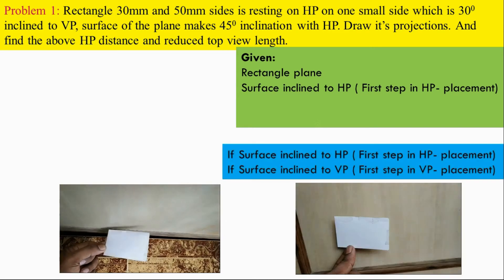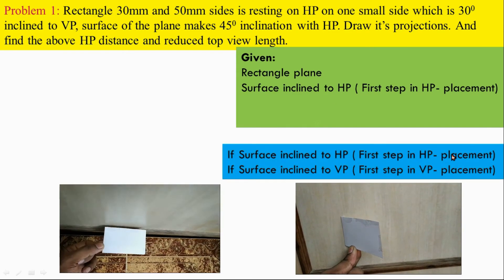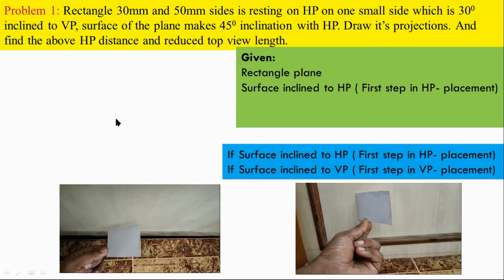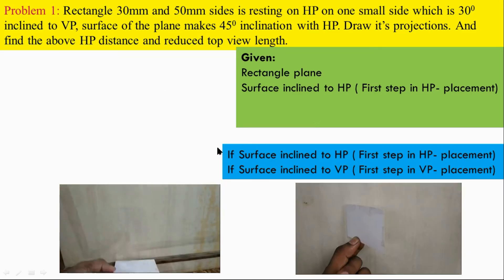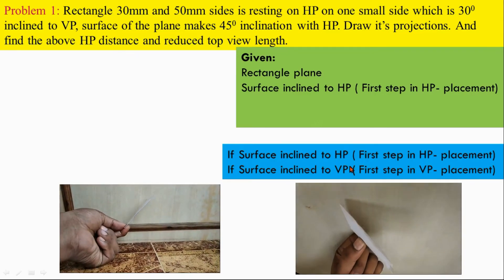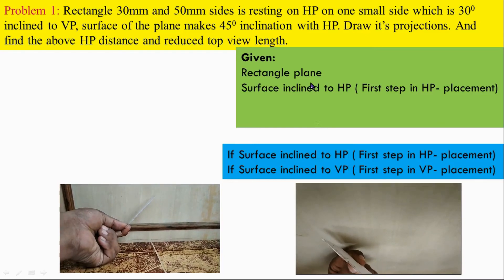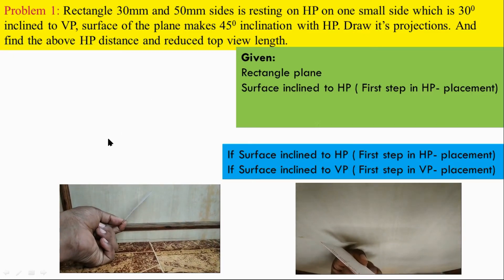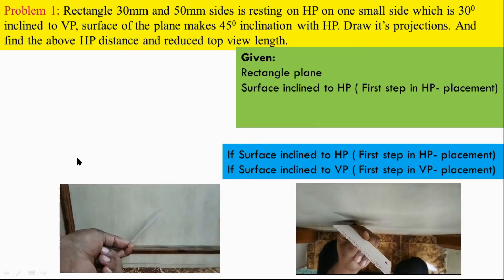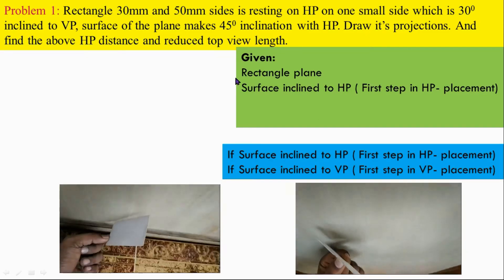If the surface is inclined to HP, the first step will be in HP. If it is inclined to VP, the first step will be in VP. This is because at the surface inclination plane view only we can see the base of the plane.